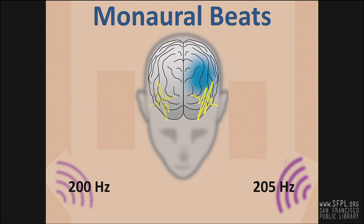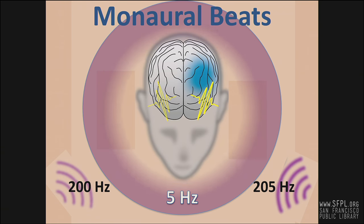Monaural beats are the result of mixing two separate steady tones externally, producing nearly the same sound as binaural beats. Two slightly different steady tones are introduced to each speaker and the resulting sound is mixed before it reaches the ear. Since the produced tone is formed outside the skull, monaural beats do not require headphones to work, whereas binaural beats do.